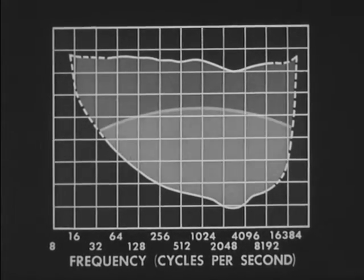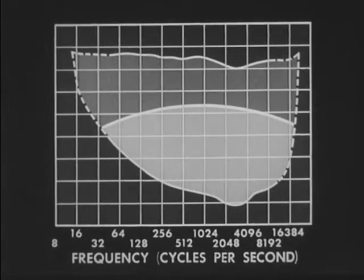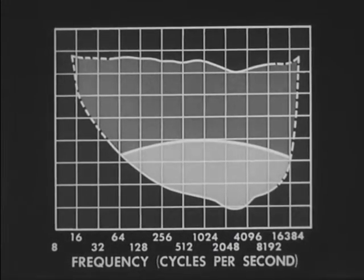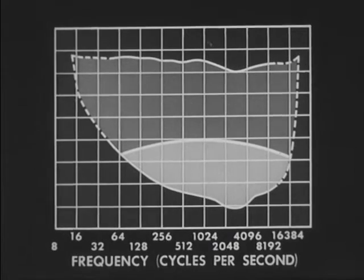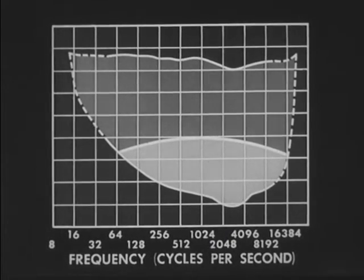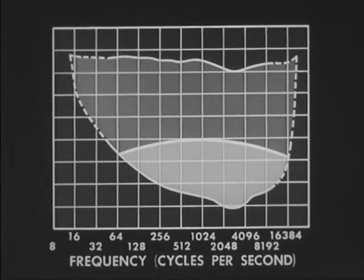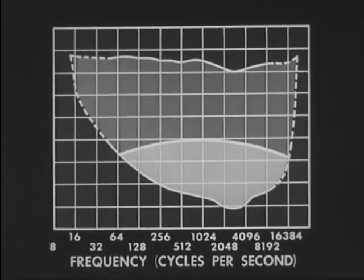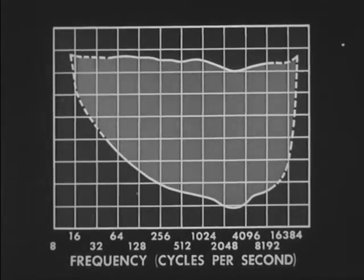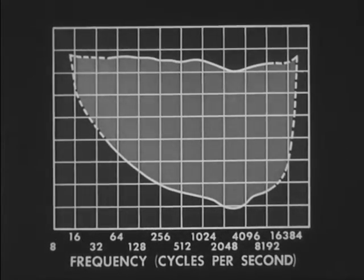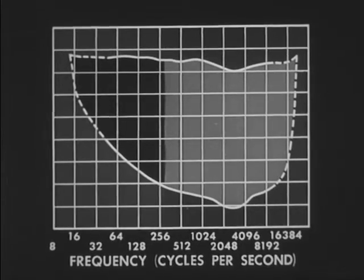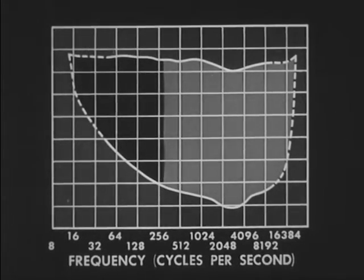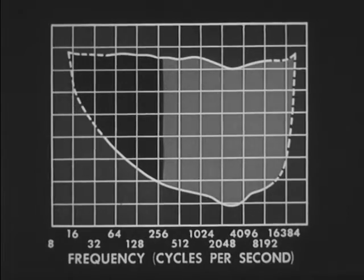When normal amplification is reduced in volume, hearing is effective. Notice the change of quality in speech caused by this unnatural volume. Eliminating the lower frequencies makes another change in sound, causing an unnaturalness, particularly in the vowels.